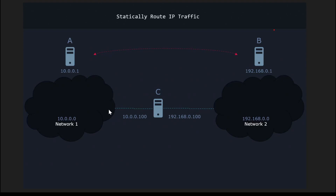Now A and B cannot talk with each other since they are in different networks. So we are connecting A and B via computer C. We are also assigning two different IPs to talk with each network. Both networks cannot talk to each other since A and B are connected through computer C, which is known as a router.